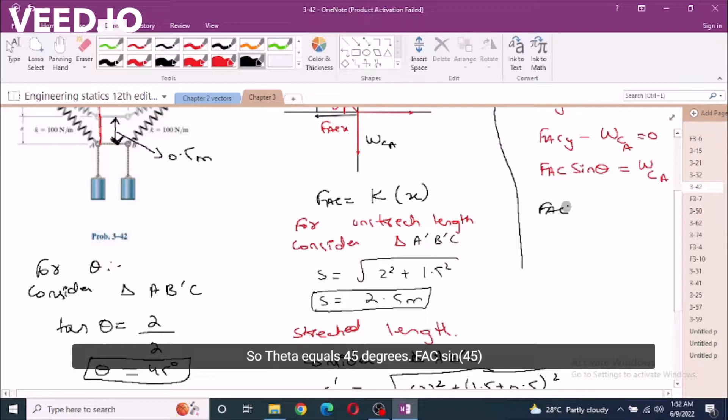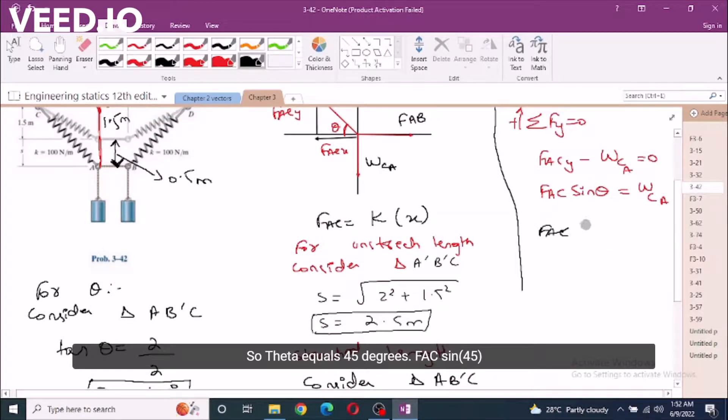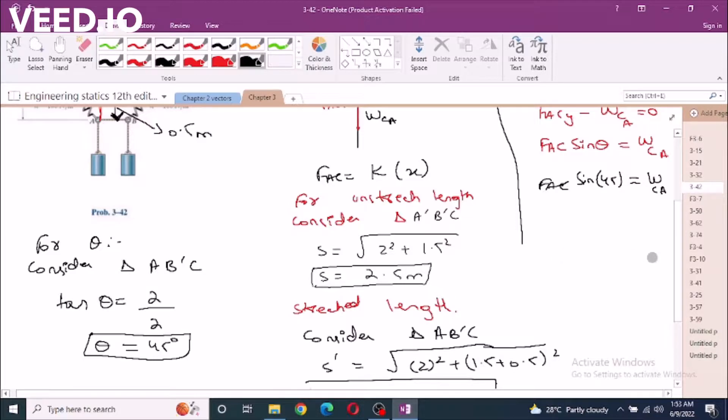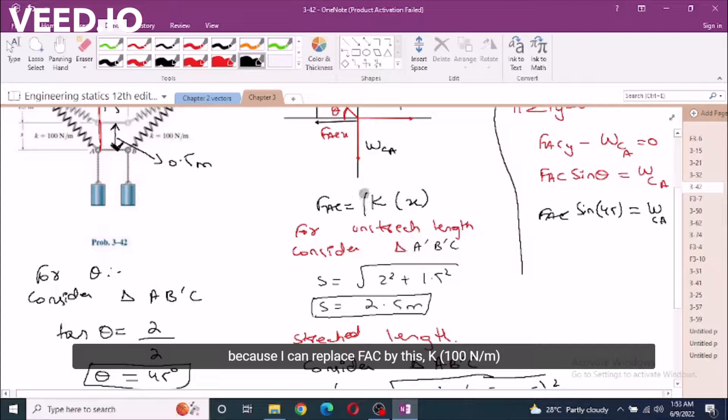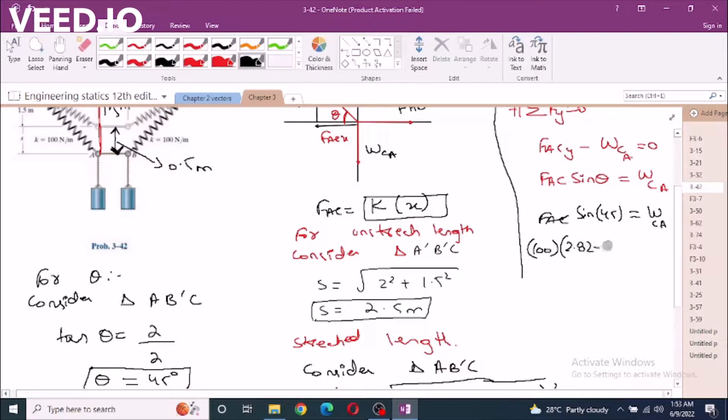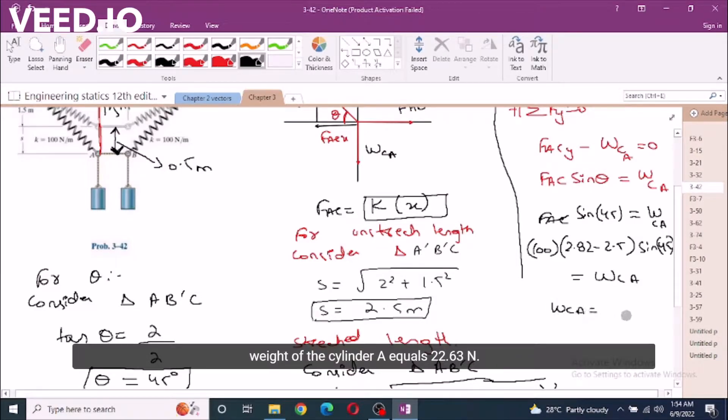FAC sin 45 equals weight of cylinder A. FAC can be easily found out because I can replace FAC by K, which is 100, times the extension, which is 2.82 minus 2.5, times sin 45, equals weight of cylinder A. From here, weight of cylinder A equals 22.63 newtons.